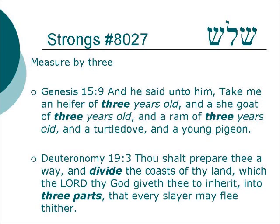Deuteronomy 19:3 — Thou shalt prepare thee a way, and divide the coast of thy land, which the Lord thy God giveth to thee to inherit, into three parts, that every slayer may flee thither. Talking about the cities of refuge. There is only one word in the Hebrew which means to divide into three parts, and that is from the root shalosh, three. So it has this idea also of dividing, the idea of measuring.